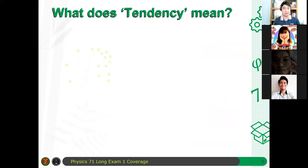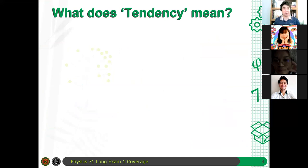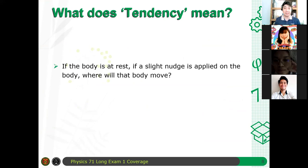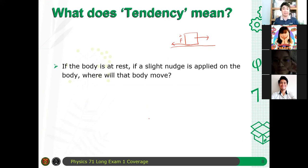So the question now is: what did I mean by 'tendency'? Let me clarify. What I mean by 'tendency' is this: if the body is at rest and a slight nudge is applied on the body, where will that body move? For example, if I have a box and it is at rest, and a slight nudge moves it in this direction, then the direction of the frictional force should be opposite — that should be the direction of the frictional force. So what friction wants to do is oppose the expected movement of an object — its potential motion or its actual motion.